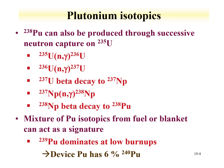Plutonium-238 can also be produced through successive neutron captures on uranium-235. Uranium-235 forms uranium-236, which captures a neutron to form uranium-237, which beta decays to neptunium-237. Neptunium-237 captures to form neptunium-238, which then beta decays to plutonium-238. This neptunium-to-plutonium-238 route is also the production pathway for plutonium-238 used in thermoelectric applications.